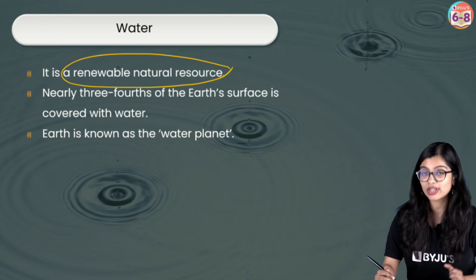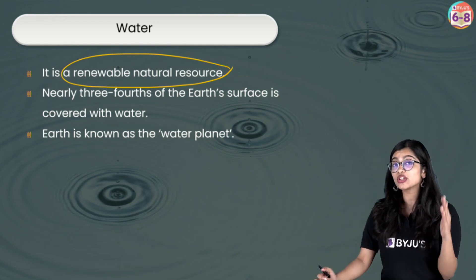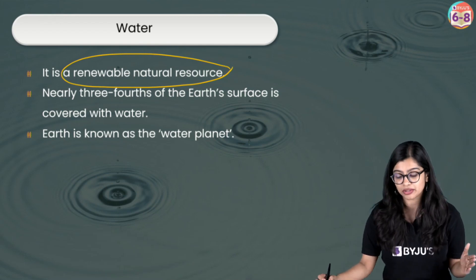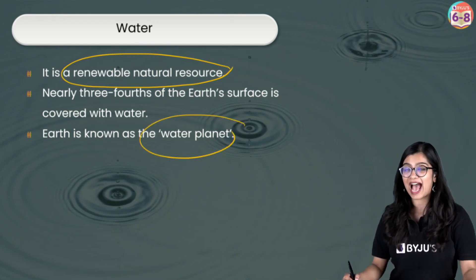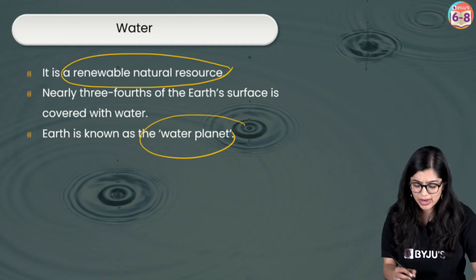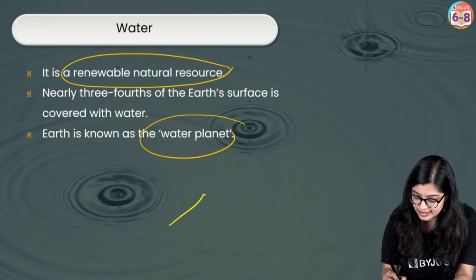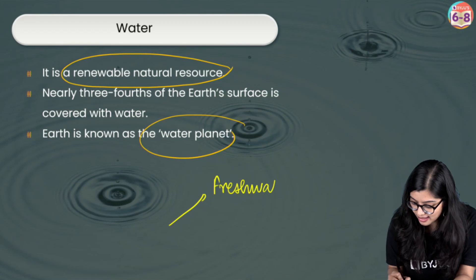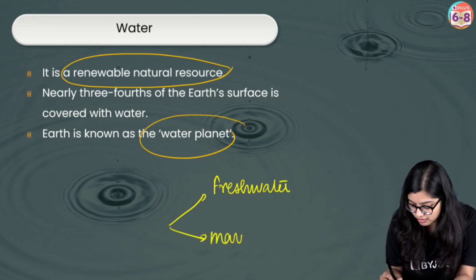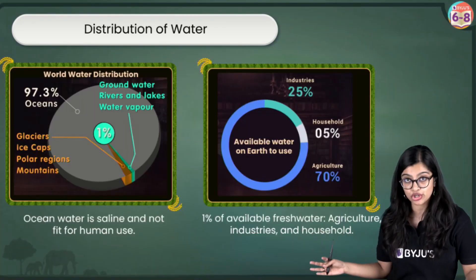When we talk about how much water is available to us, three-fourths of the earth is covered with water, which is why we always say that earth is known as a water planet. When we talk about water, broadly we see that there are two categories: fresh water and marine water. These two categories are important because we need to understand the distribution of water.